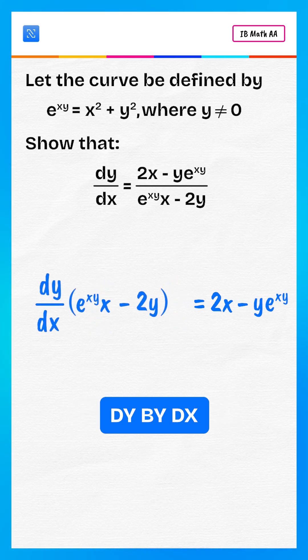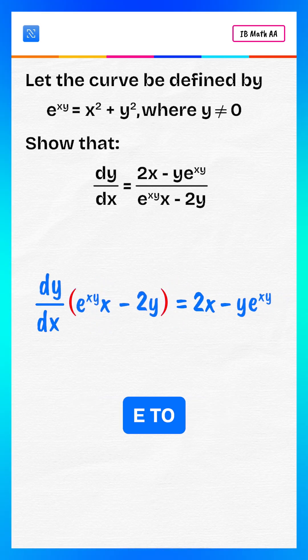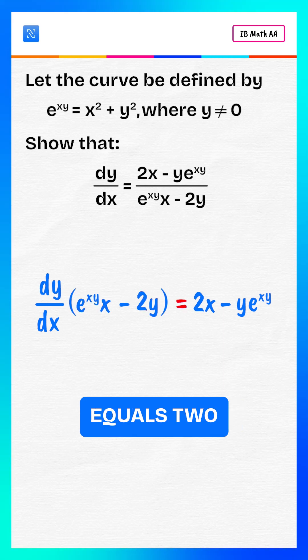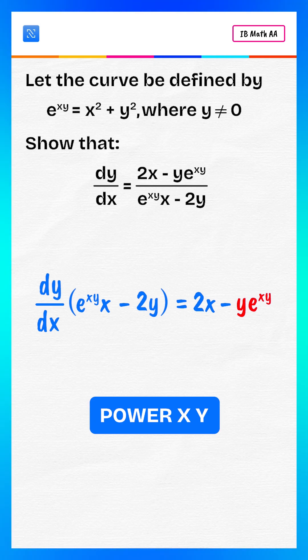Factor dy by dx. dy by dx multiply e to the power xy multiply x minus 2y equals to 2x minus y multiply e to the power xy.